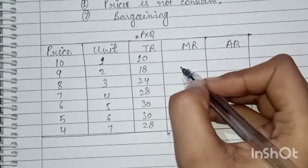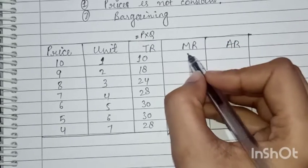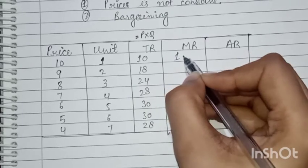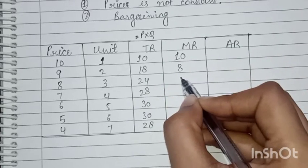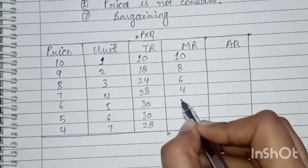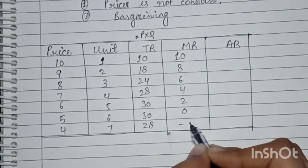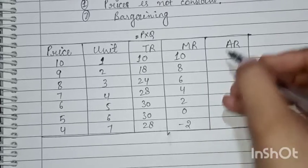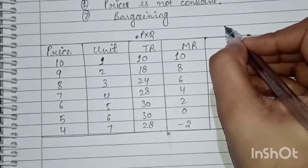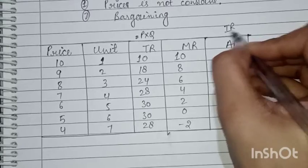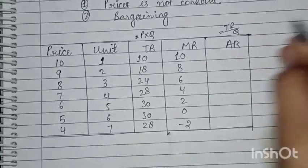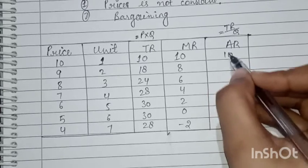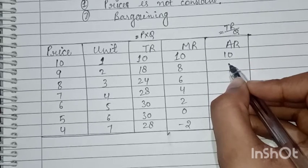Now MR is calculated. And AR is calculated as TR over Q. For the first unit, 10 over 1 gives AR as 10, then 9, and so on — AR falls as quantity increases.